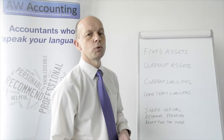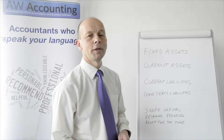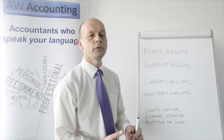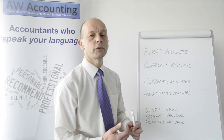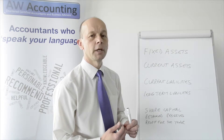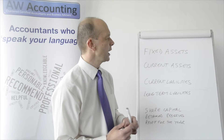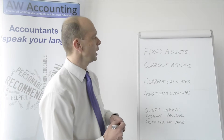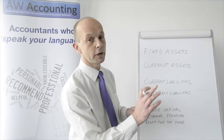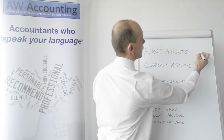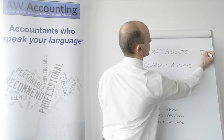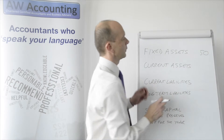Fixed assets are all the solid things — they never change — so they might be buildings, plants, all the furniture. In our example, we've got Smith & Jones, our toy makers as you remember from last time, and we've got £50,000 worth of fixed assets.